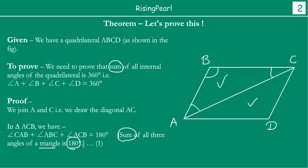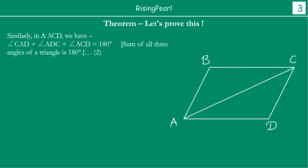Similarly, in triangle ACD, which is the second triangle, this angle plus this angle plus this angle is again 180 degrees, because in triangle ACD the sum total of all three angles is again 180 degrees.